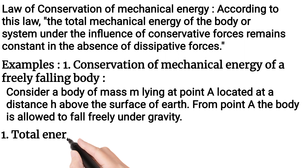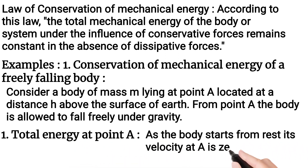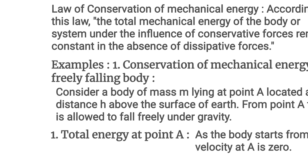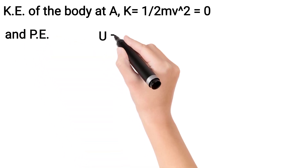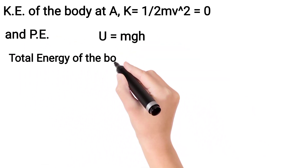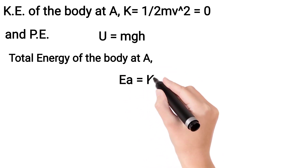Examples — Conservation of Mechanical Energy of a Freely Falling Body. Consider करते हैं कोई body जिसका mass M हो, वो एक point A पे है जिसकी height H है earth surface से। उस point A से वो object gravity की वजह से नीचे गिरी है। Point A में body rest पे है तो उसकी velocity 0 होगी, इसलिए kinetic energy of the body at point A is equals to 0.